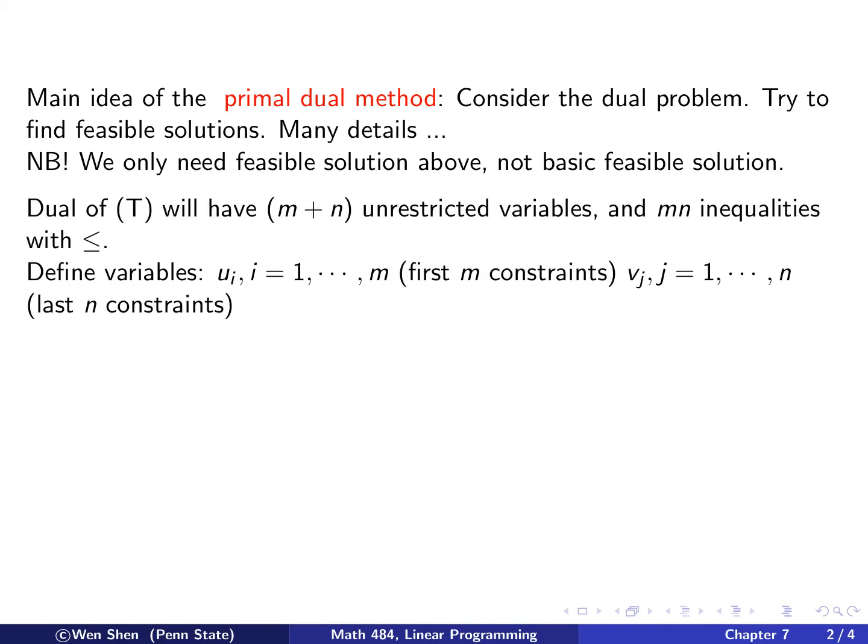The dual of the transportation problem now would have M plus N unrestricted variables, because these are the constraints in problem T with equal sign. And it will have M times N inequalities with less than equal sign, because these are how many terms were in the objective function of T. When M and N are large, these are large numbers.